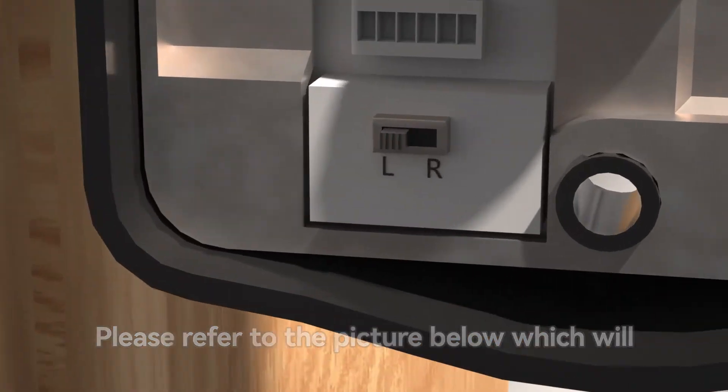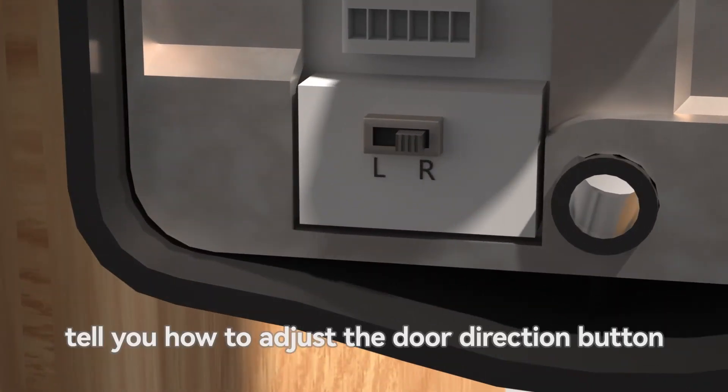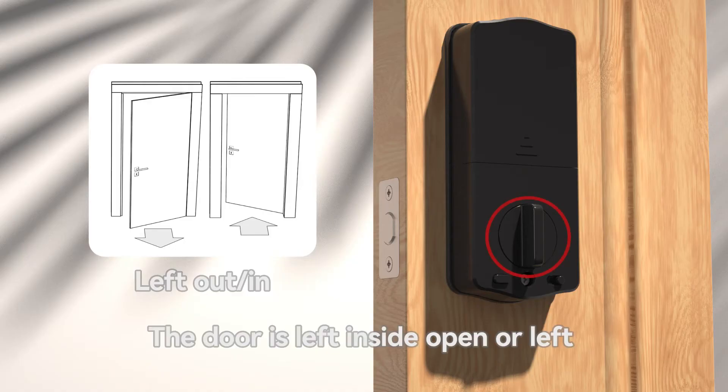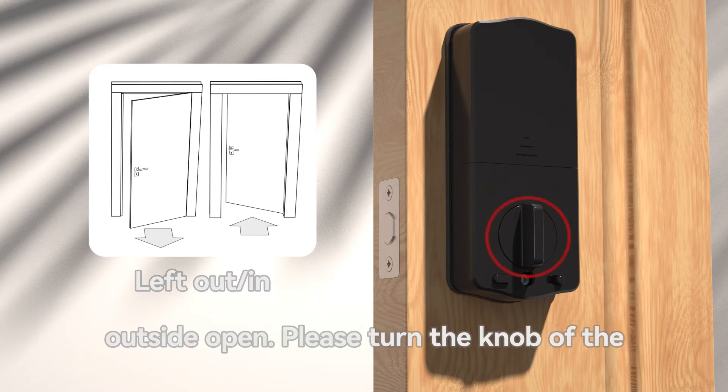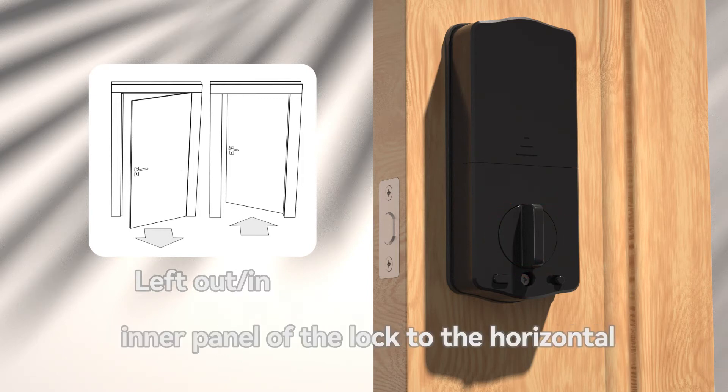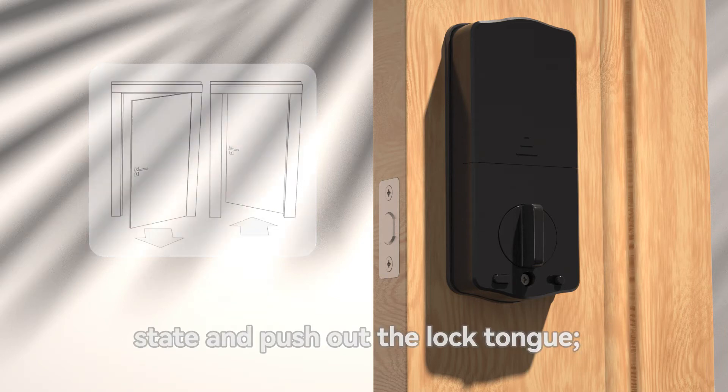Please refer to the picture below which will tell you how to adjust the door direction button. The door is left inside open or left outside open. Please turn the knob of the inner panel of the lock to the horizontal state and push out the lock tongue.